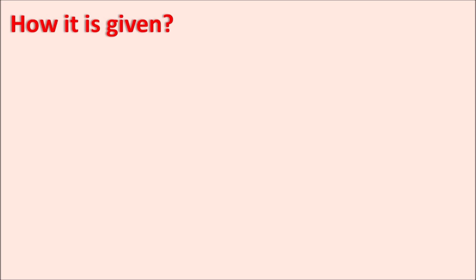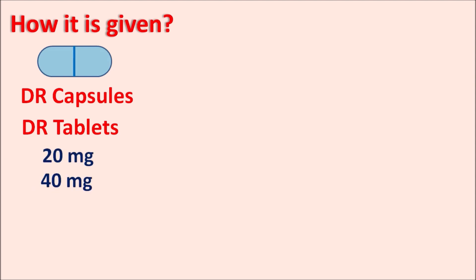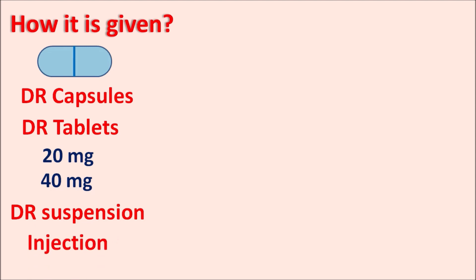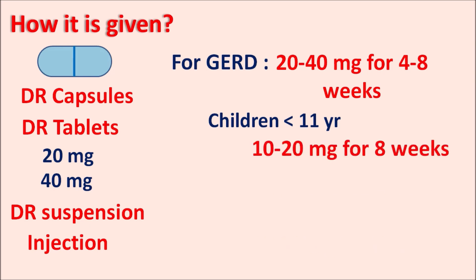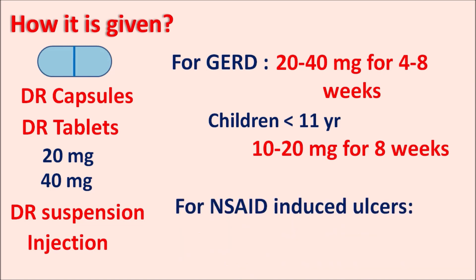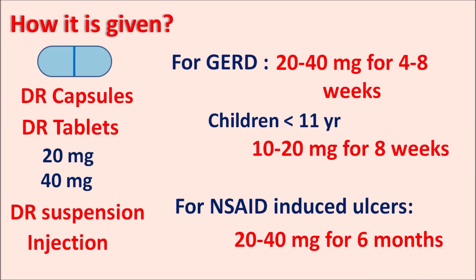This drug is available in different forms, particularly as delayed release capsules and delayed release tablets, available at doses of 20 mg and 40 mg. It is also available as a delayed release suspension and as a solution for injection. The dose depends on the clinical indication. For GERD, the drug is initiated at 20 to 40 mg given for 4 to 8 weeks; in children less than 11 years, it is given at 10 to 20 mg for 8 weeks. For NSAID-induced ulcers, it can be given at 20 to 40 mg for 6 months.